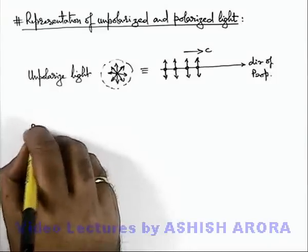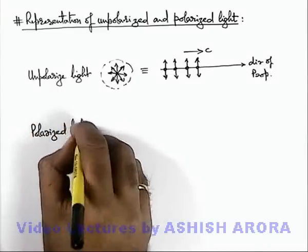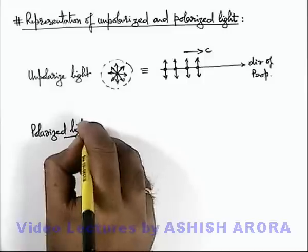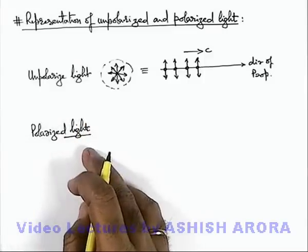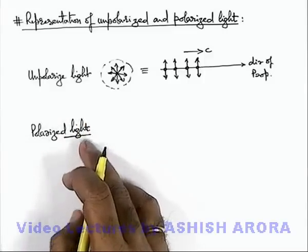Now if we talk about polarized light, polarized light is the one in which only one electric field component is left over and rest all are removed or blocked from the unpolarized light.